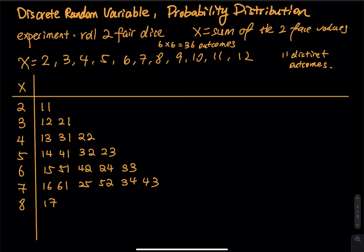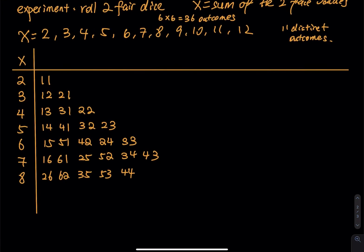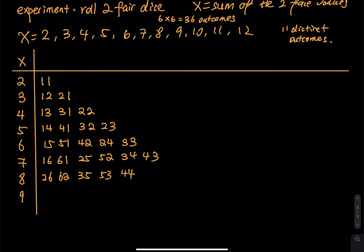So let's erase that. To get an 8, we have 2+6, 6+2, 3+5, 5+3, and 4+4. For a sum of 9, can we do 1+8? No — the maximum is 6. So we have 3+6, 6+3, 4+5, and 5+4. That's it.